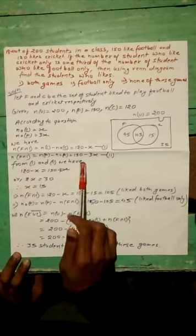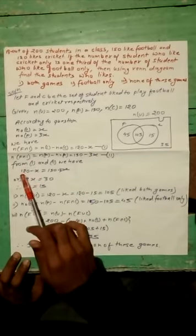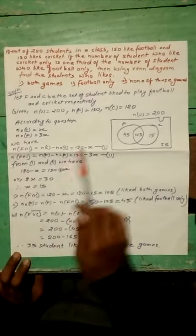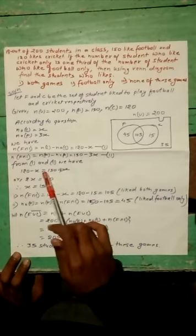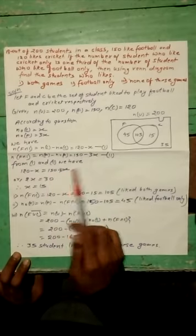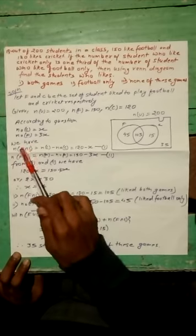In the same way, from equation 1 and 2 we have 120 minus X is equal to equation 1, and it is equal to 150 minus 3X.